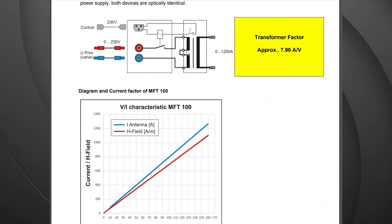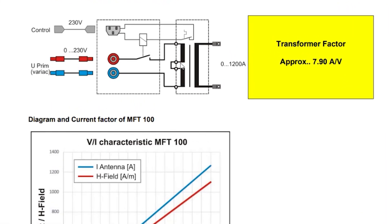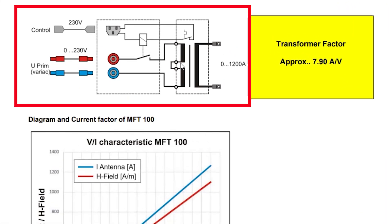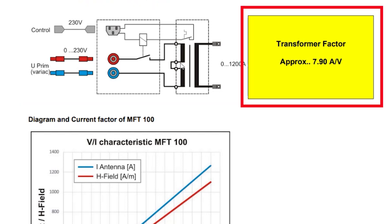Here you're going to find the data sheet for magnetic field testing and this is the beginning of the information that relates to the MFT 100. You can see we have a diagram on the left that labels the different connections on the transformer and then to the right of that we have our transformer factor.